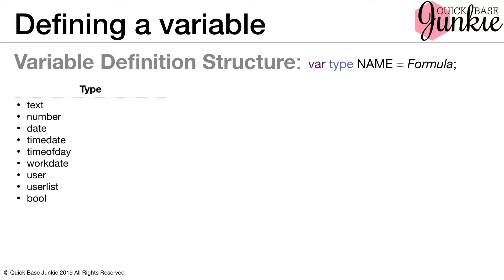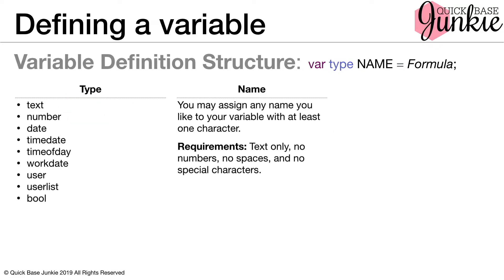The type here indicates the type of result that the formula has. In our case, the result will be text. For the name, you can assign any name you like, so long as it has at least one character. However, it's only text — no numbers, no spaces, and no special characters. While not a requirement, I also prefer to make my variables all caps. This helps visually distinguish them from other items in my formula.